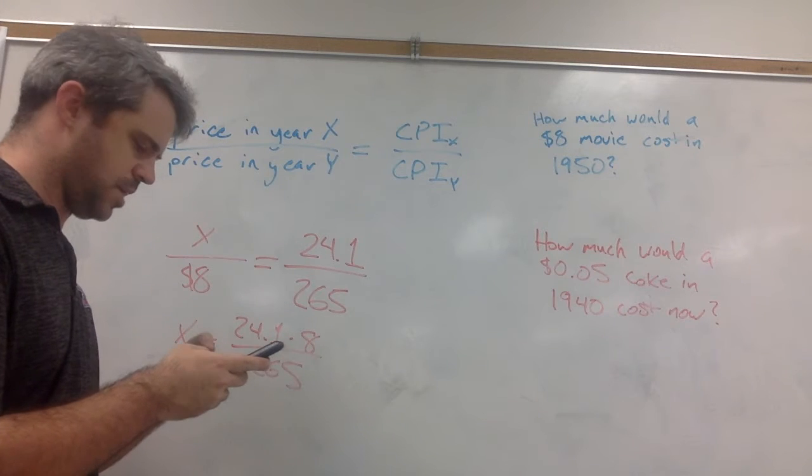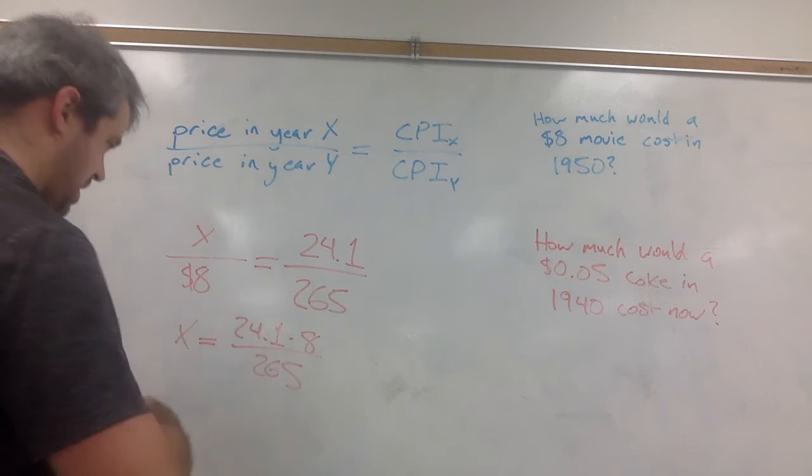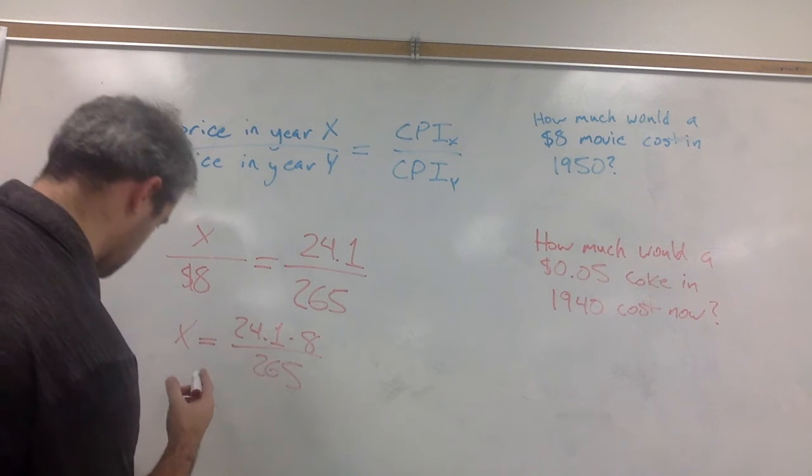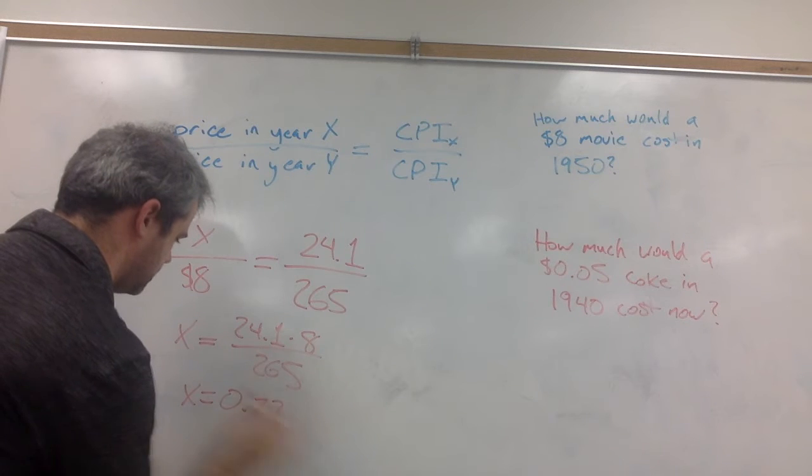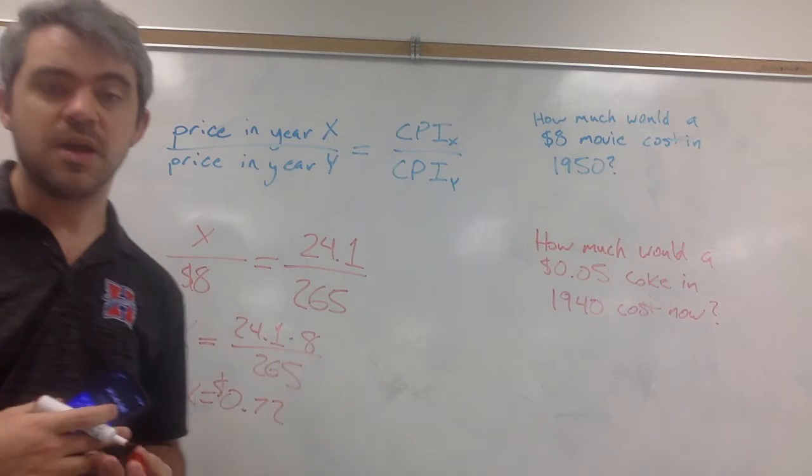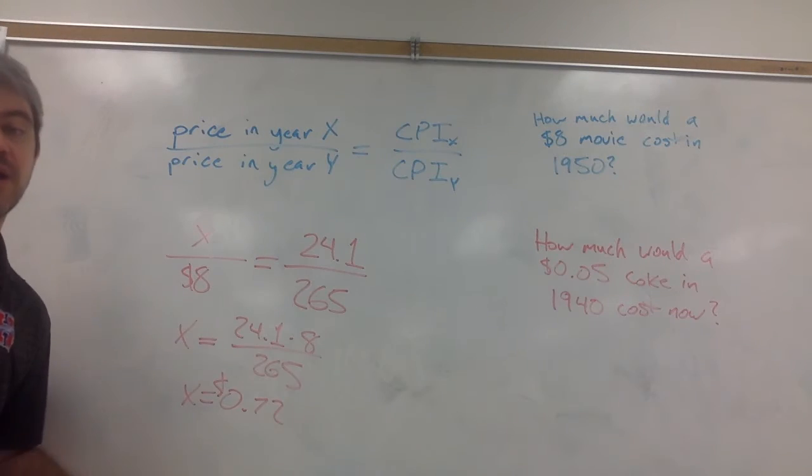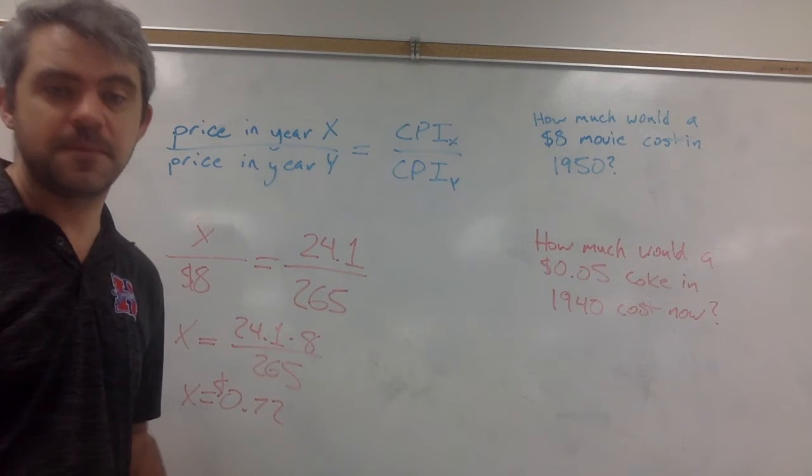24.1 times 8 divided by 265 is 0.72. 72 cents, about a dollar. Okay, so in 1950, we would expect the price of a movie ticket to be about 72 cents.